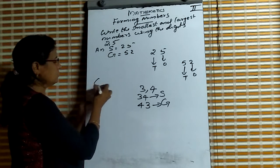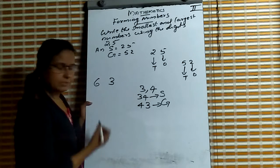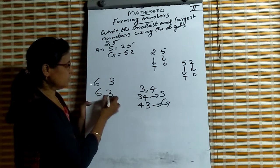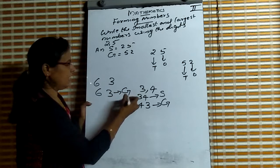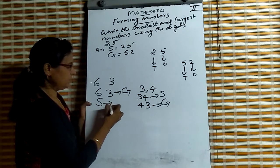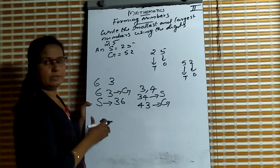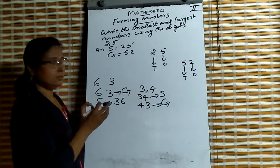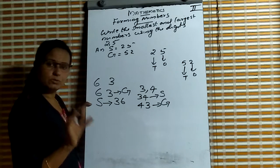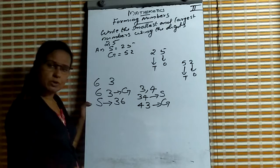The next question is 6 and 3. Which is the greatest number? 63. And which is the smallest number? 36. These are the methods to form two-digit numbers using the given digits without repeating.